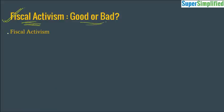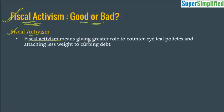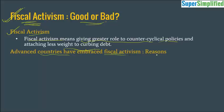This chapter is talking about fiscal activism. Fiscal activism means giving a greater role to counter-cyclical policies and attaching less weight to curbing debt. In simple words, the focus is now shifting from closely monitoring and tightly controlling debt levels to using fiscal policy to actually stimulate growth. Countries that are too serious about their debt levels cut their spending and postpone infrastructure projects or social sector programs. But some experts argue that this compromises the welfare of the people. Advanced economies allow a higher level of debt with the expectation that this investment will lead to growth, enabling them to repay the debt in the future. That is why advanced economies have embraced fiscal activism.